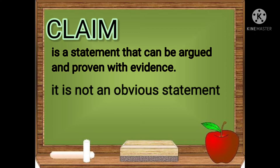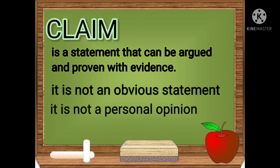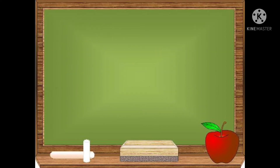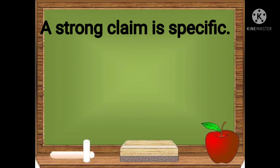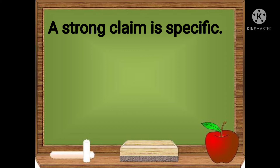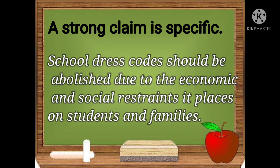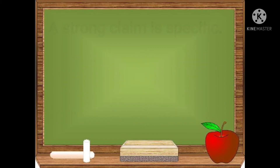A claim is not a personal opinion, like saying 'dogs are better than cats' — that's just a matter of opinion. A strong claim is specific. For example: 'School dress code should be abolished due to the economic and social restraints it places on students and families.'